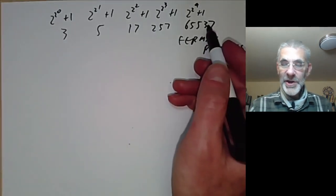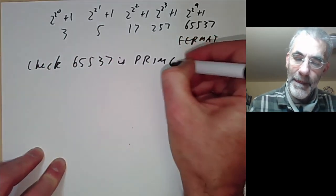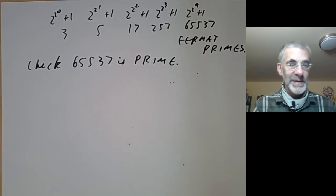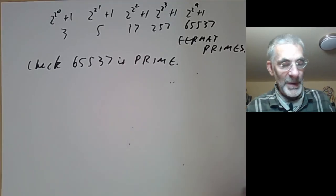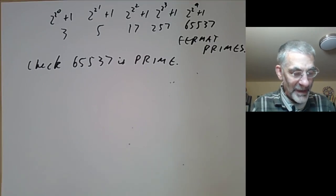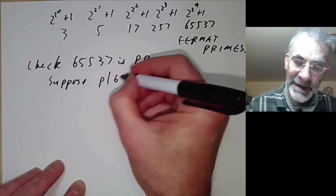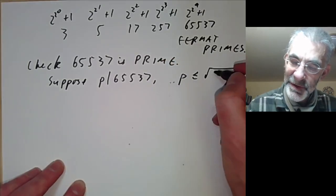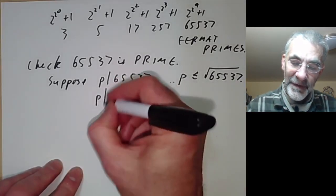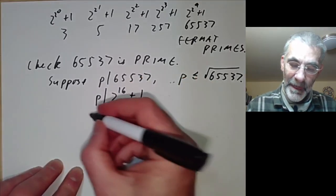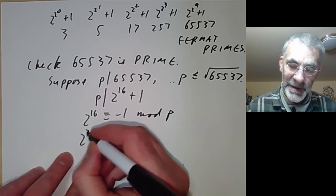Let's check that 65537 is prime, in the way Fermat probably did it. These days you can just look it up on Wikipedia, but here's the method. Suppose p divides 65537 and p is at most the square root of 65537 — we want to show no such prime exists. This means p divides 2 to the 16 plus 1, so 2 to the 16 is congruent to -1 mod p. Squaring gives 2 to the 32 is congruent to 1 mod p.